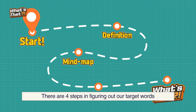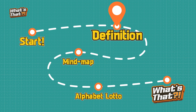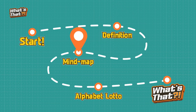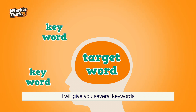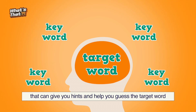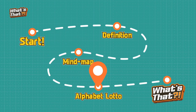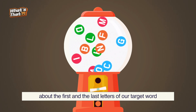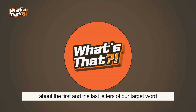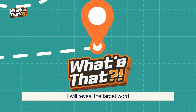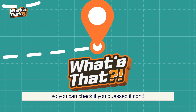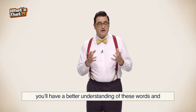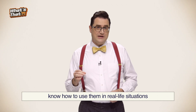There are four steps in figuring out our target words. First, definition — I will give you the dictionary definition of the target word. Second, mind map — I will give you several keywords that can give you hints and help you guess the target word. Third, alphabet lotto — through the lottery, I will give you hints about the first and last letters of our target word. Next, I will reveal the target word so you can check if you guessed it right. By the end of this episode, you'll have a better understanding of these words and know how to use them in real life situations.